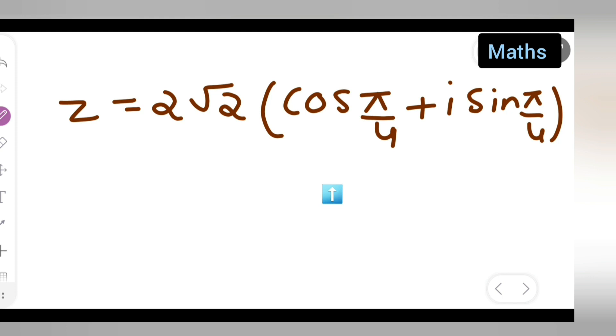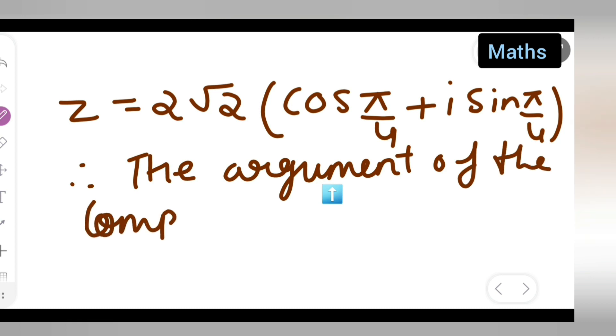Therefore you can say that the argument of the complex number is pi by 4. So finally we have found out the argument of the complex number, pi by 4 is the answer.